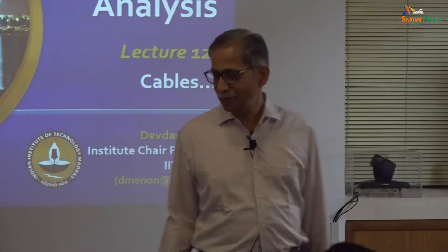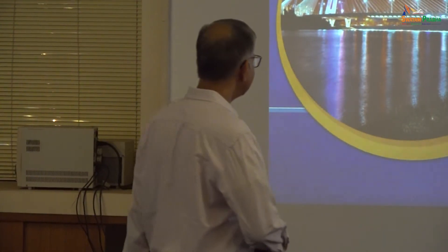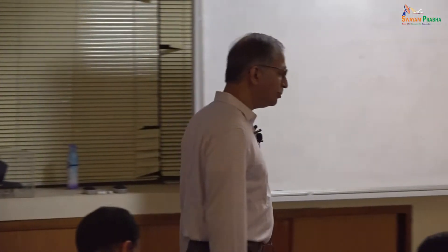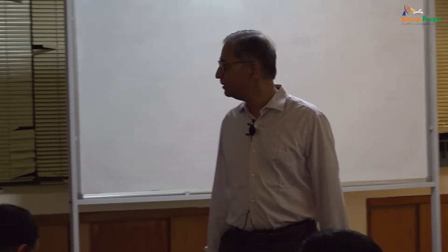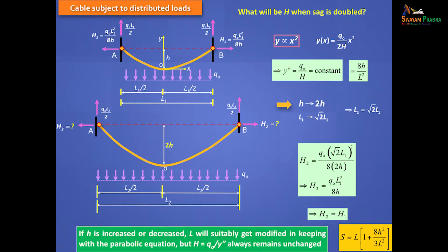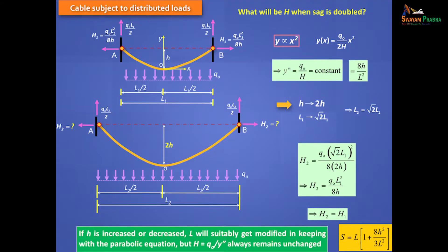Let's start. We are continuing with cables. If you remember in the last class, with reference to suspension bridges, we said that if you take any cable in which the loading is uniformly distributed along the projected plan, as in the case of a suspension bridge, and if the two supports are at the same level, then it's very easy to get the support reactions.